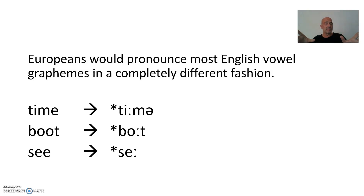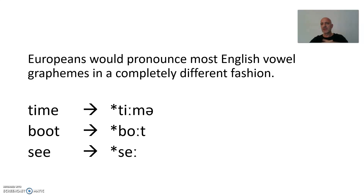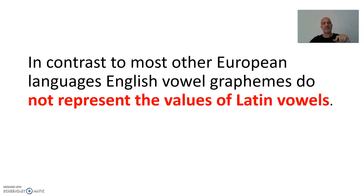And the other way around — think about Europeans who see English for the first time. If there were somebody who never had any English, none whatsoever, and he saw English spelling for the first time, he'd probably pronounce 'team' as 'tay-am', 'boot' as 'boat', because he is used to other values of these vowel graphemes. The reason is that in contrast to most other European languages, English vowel graphemes do not represent the values of Latin vowels.